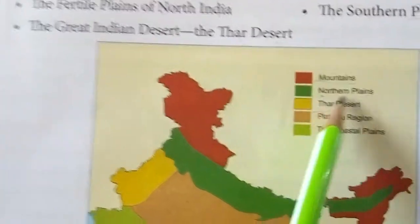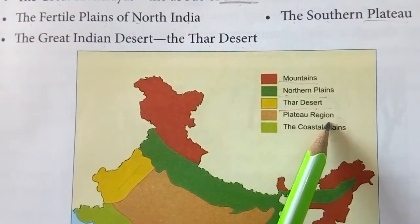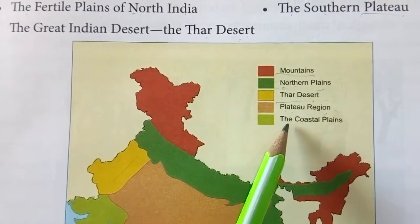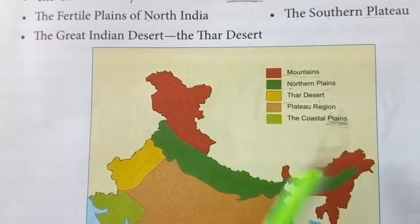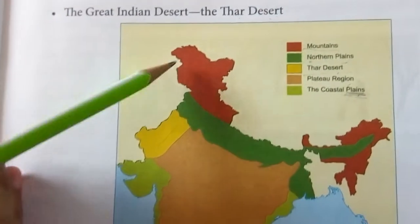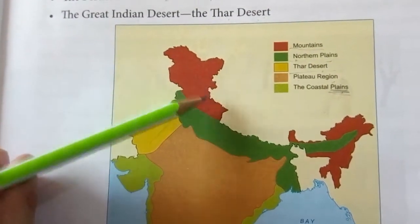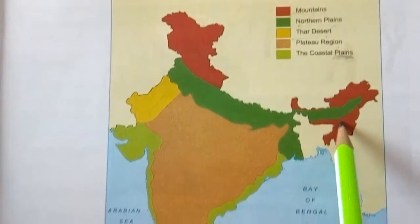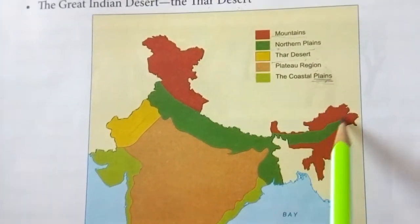Here you can see on the map: this brown area represents mountains. The brown-coloured region covering this entire area is mountains.